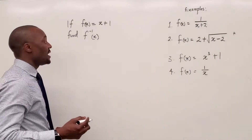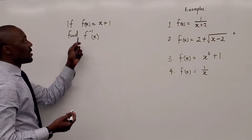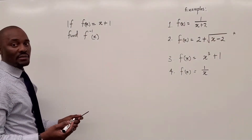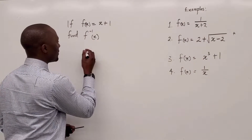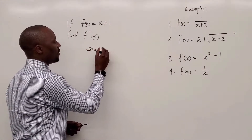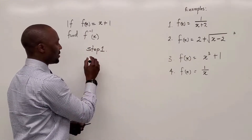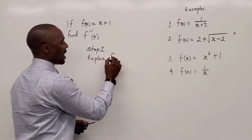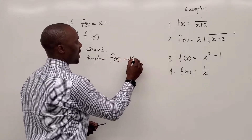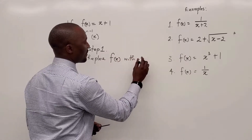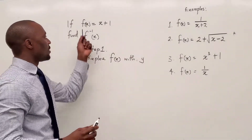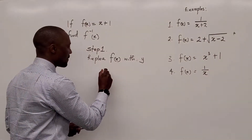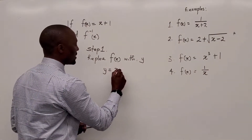So the first step you need to take is to replace this function with the letter y. Step one is to replace f of x with y. That's all you have to do, because we don't want to keep writing f of x — just use y instead. So we're going to say y equals x plus 1.